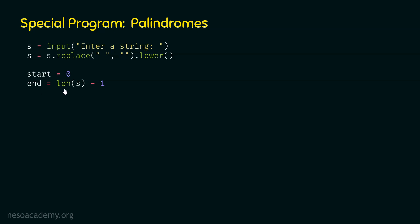Initially, start is zero and end is four if the string is 'madam.' This means start is pointing to the first letter and end is pointing to the last letter. We first have to compare the first letter with the last letter. Now after this, we need one more variable flag. We assign it the value true because we are assuming the string provided by the user is a palindrome. If flag is true, the string is a palindrome; if flag is false, the string is not a palindrome.